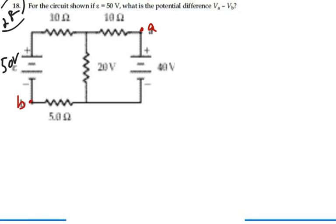Well, in order to find VA minus VB, we need to find the currents first. So we need to analyze this in our usual way, using Kirchhoff's voltage rule.